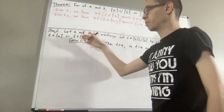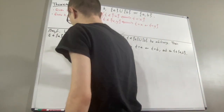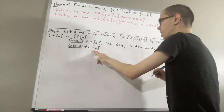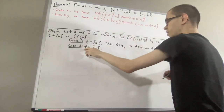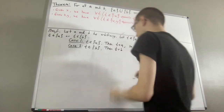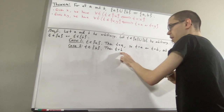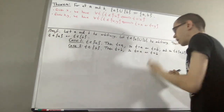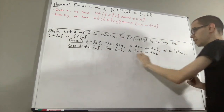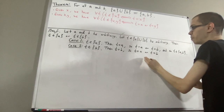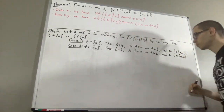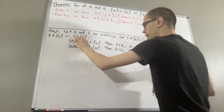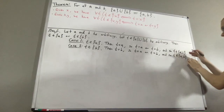Now let's move on to case two, where T is an element of the singleton set of B. Since T is an element of the singleton set of B, by the property that singleton sets satisfy, that tells us T is equal to B. So since T is equal to B, that implies T is equal to A or T is equal to B. But then, by the property that pairsets satisfy, this tells us that T is an element of the pairset of A and B. So this shows that no matter what case we have, it follows that T is an element of the pairset of A and B.